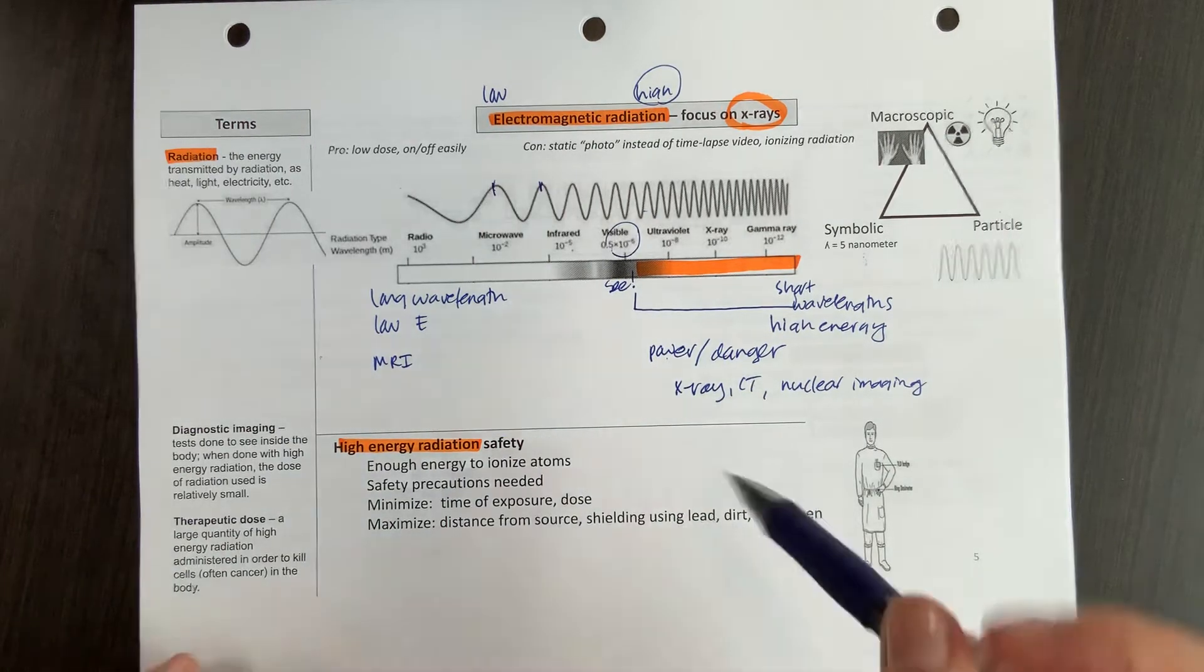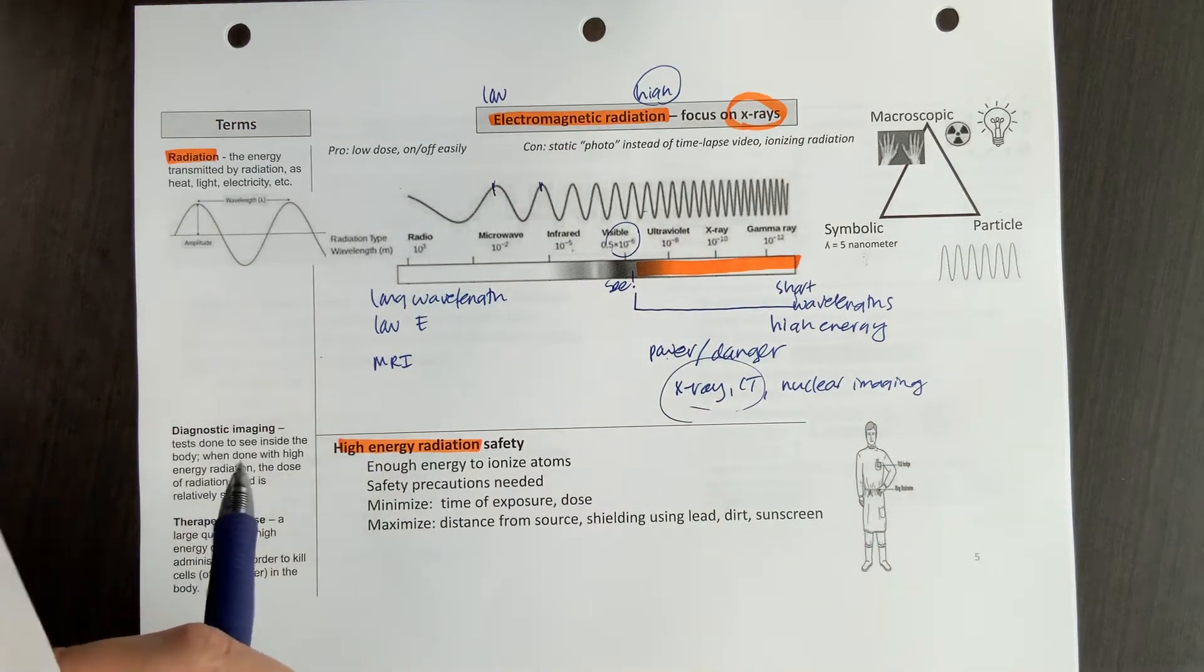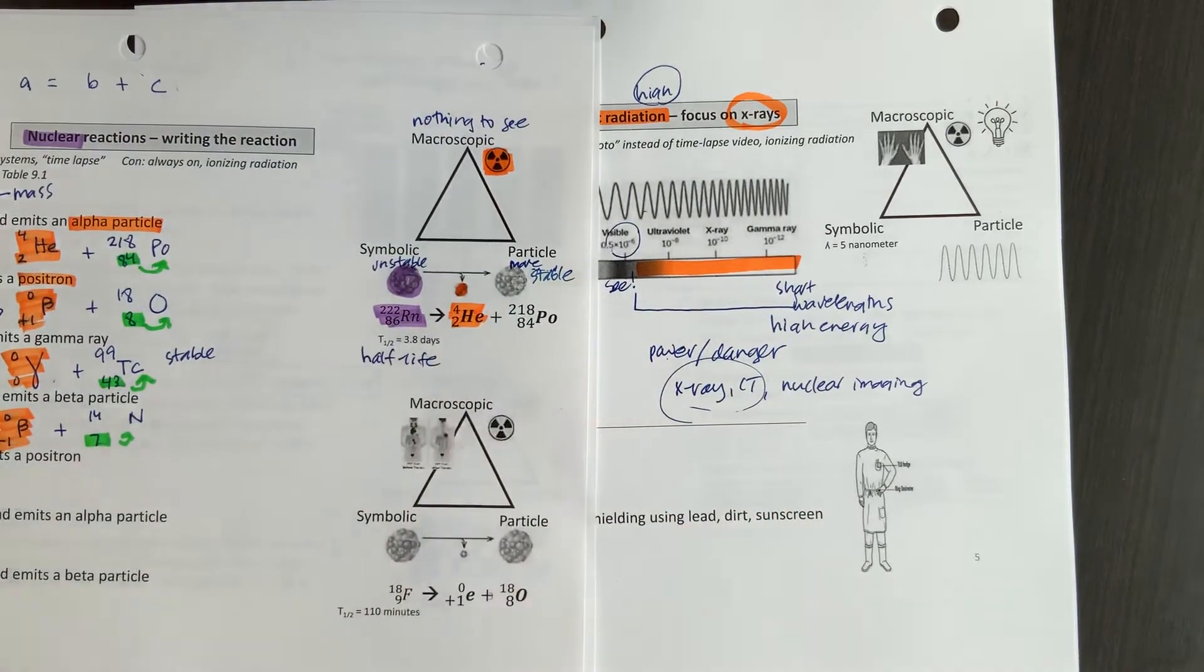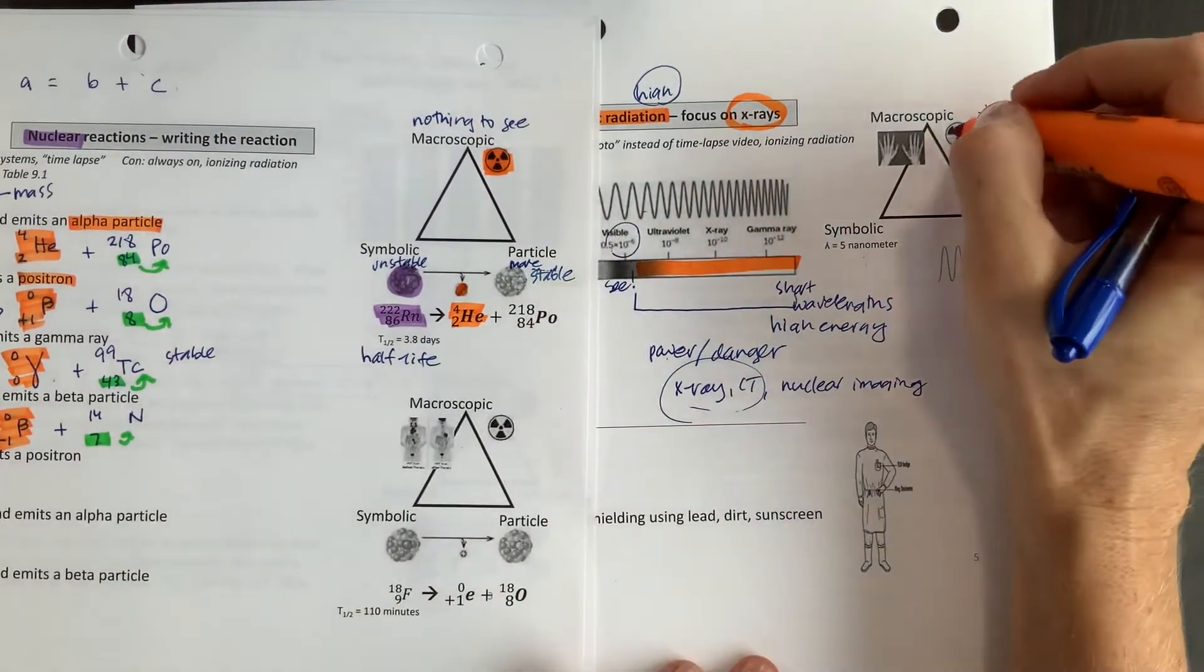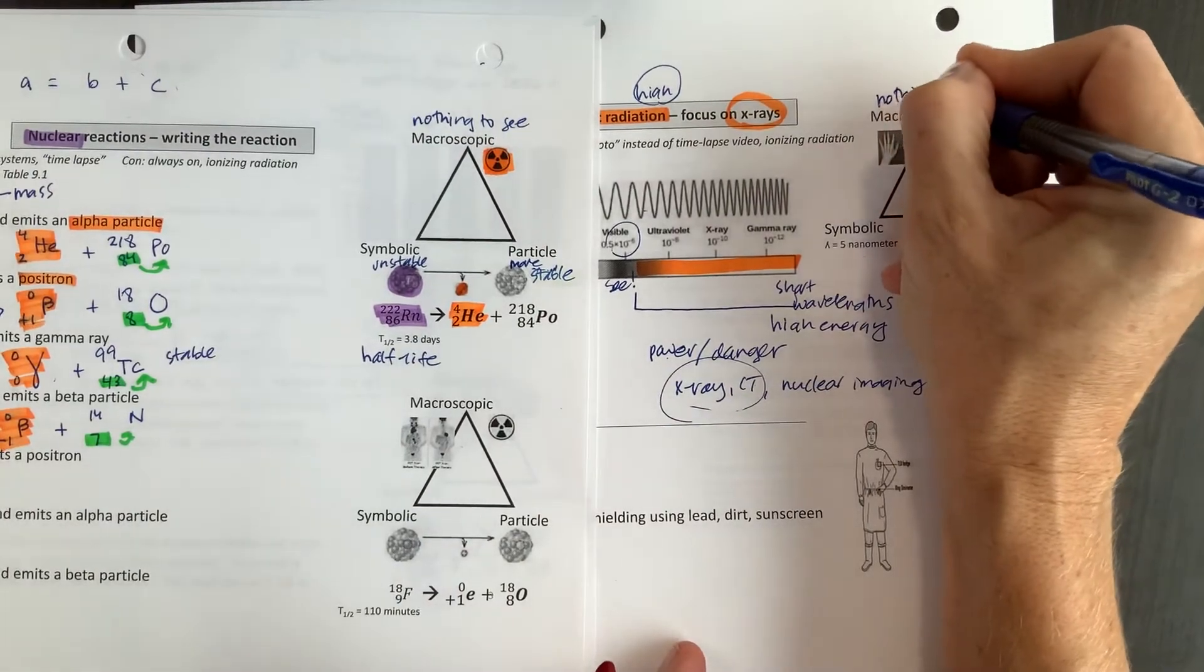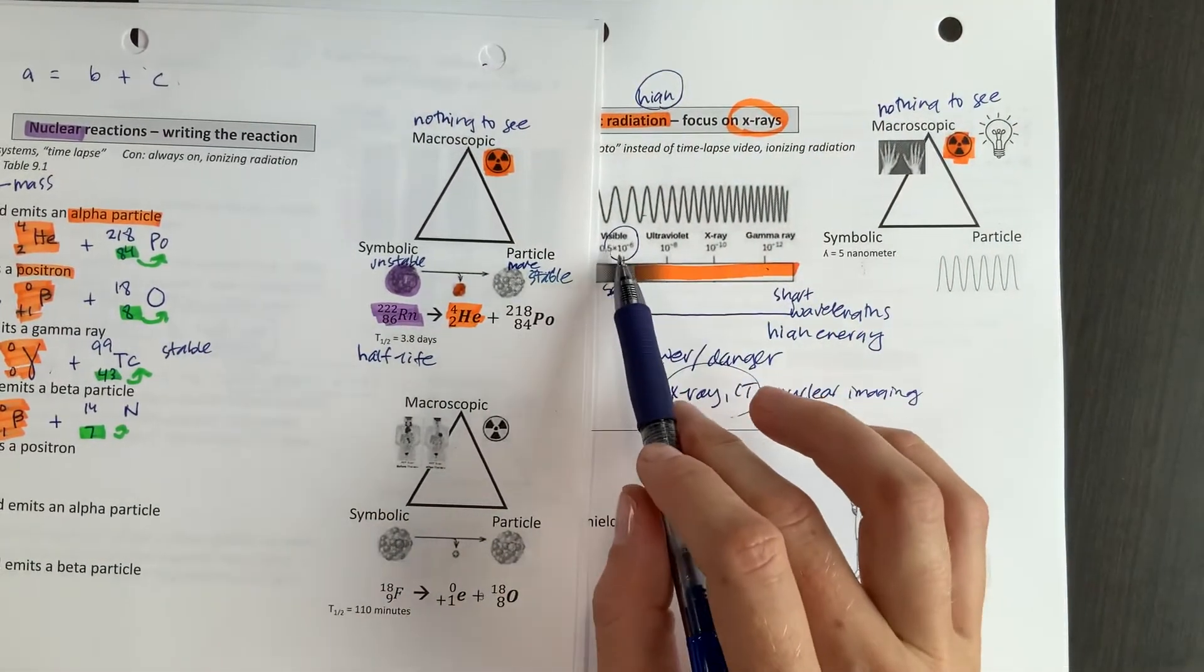Now, x-rays and CTs, just to kind of give us a little triangle to look at here with what's going on with those. And you might contrast this with what we looked at back here for the radon a couple slides ago. Again, there's nothing to see when you go to see x-rays. So again, they've got the symbol on the door. There's nothing to see because it's higher energy than what our eyes can visibly pick up.